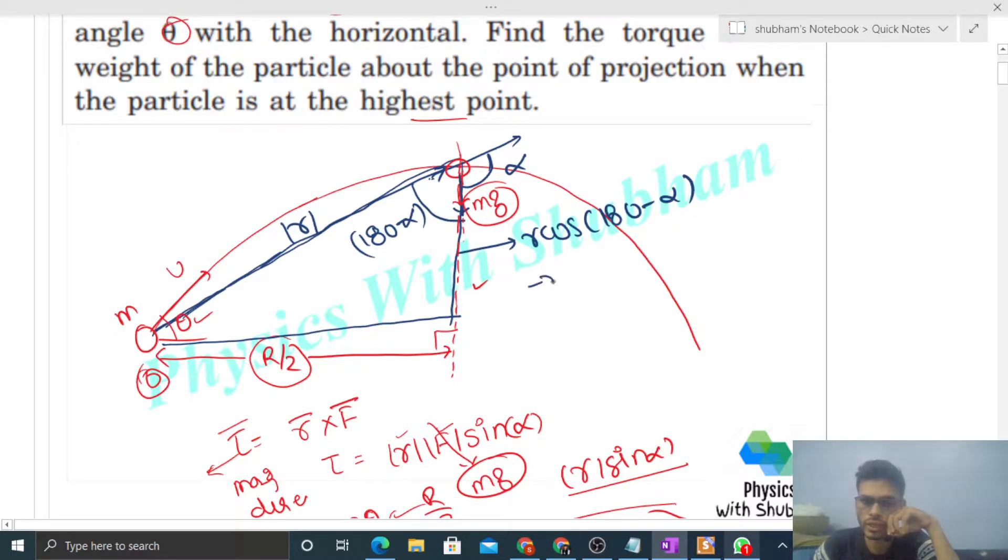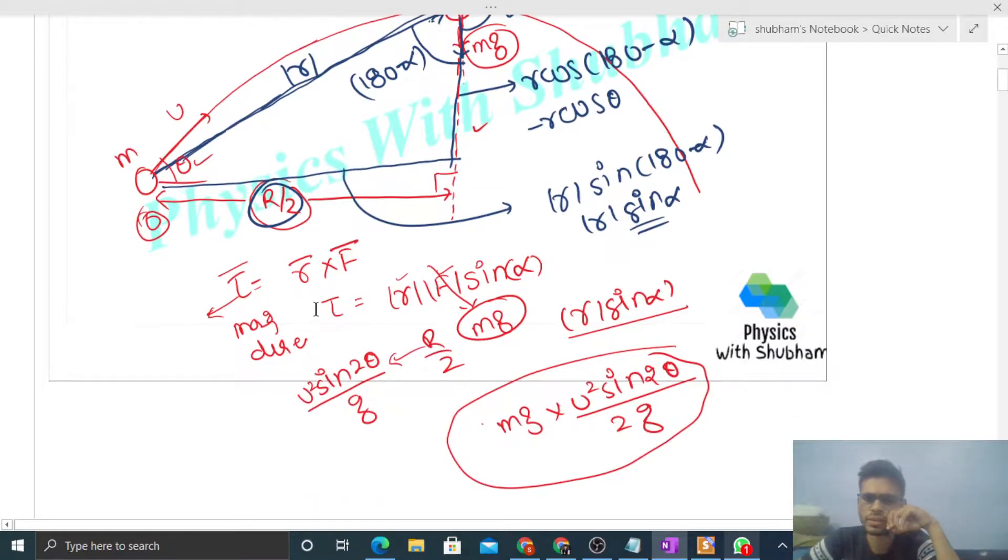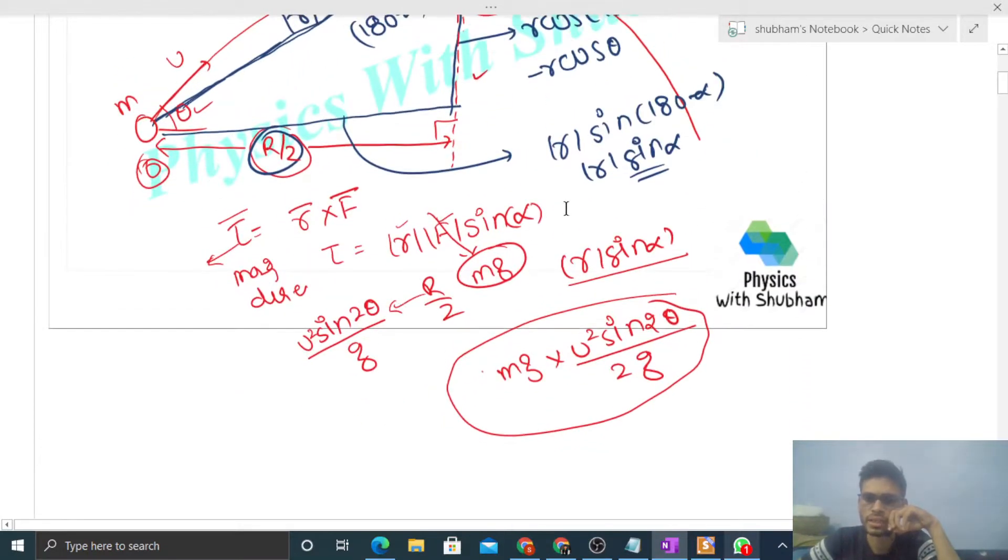The other side is r sin(180° - α). What is sin(180° - α)? It's sin α. So r sin α is R/2, as we found earlier. We've shown this both ways—the perpendicular distance is R/2. Now let's discuss direction.